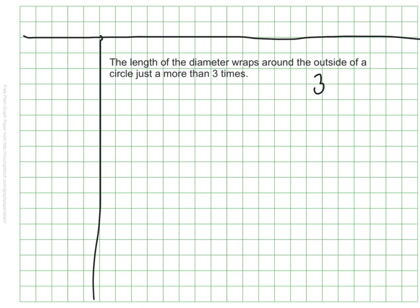It's actually really close to 3 and 14 hundredths times. And in fact, we would call it pi times to be exact. So the circumference can be found by using one of two formulas.